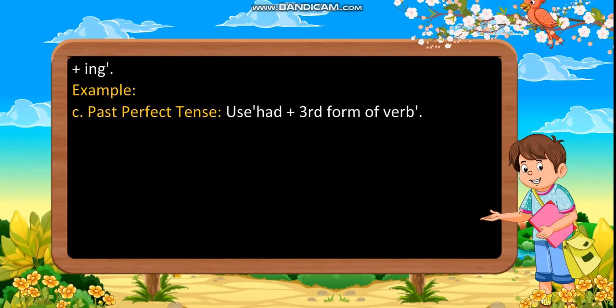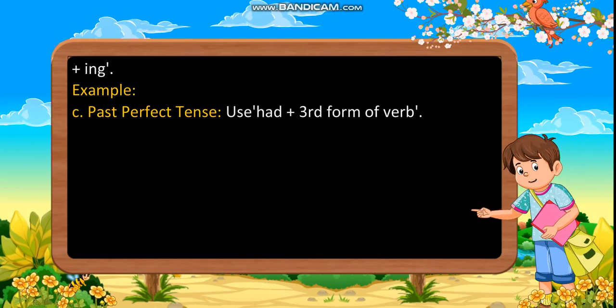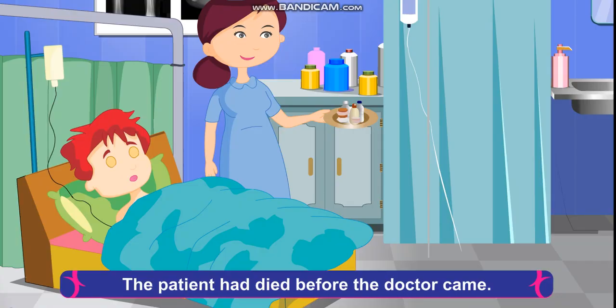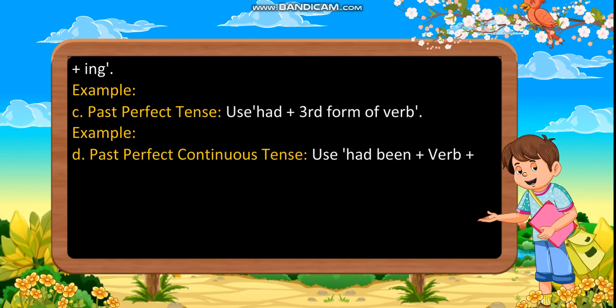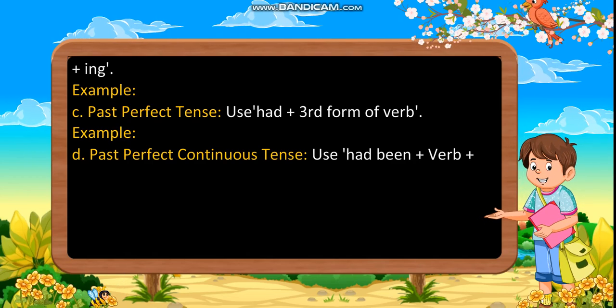Past perfect tense: Use had plus the third form of verb. Example: The patient had died before the doctor came.